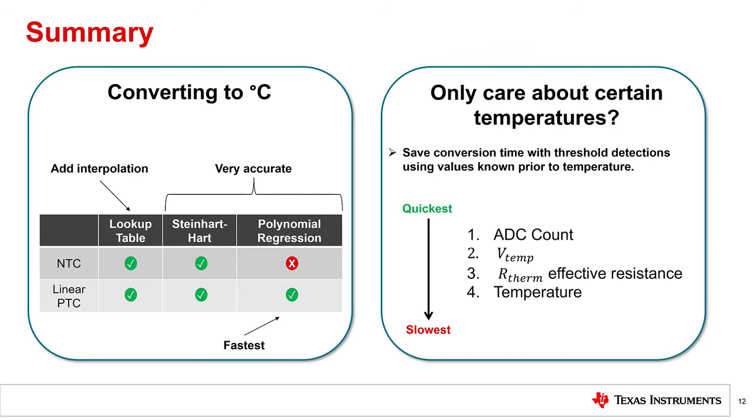However, it will require the natural logarithm function in order to perform the calculations. The number one recommended conversion method for linear PTCs is called the fourth order polynomial regression equation. Polynomial equations are the most accurate way to get a temperature from a linear PTC thermistor due to its basic math functions. It is up to 10 times faster than the Steinhart-Hart equation.